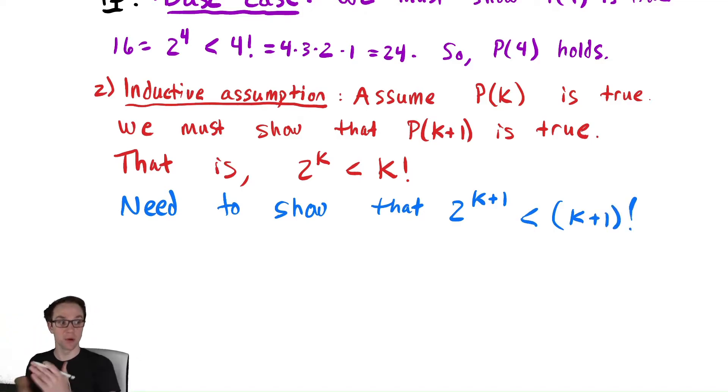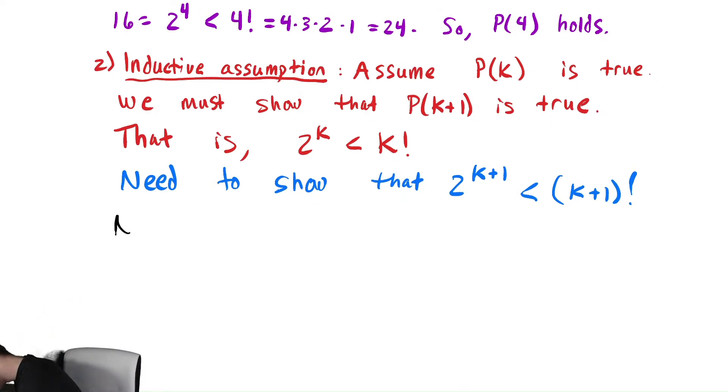So that is our goal. The way we typically do this is you either start with your inductive assumption and then do some algebra from there, or you start with one of the sides of the equation or inequality in this case and then work from there. In this case, I'm going to start with 2^(k+1) and then do some algebra and see what happens. So notice, 2^(k+1) is equal to 2^k times 2.